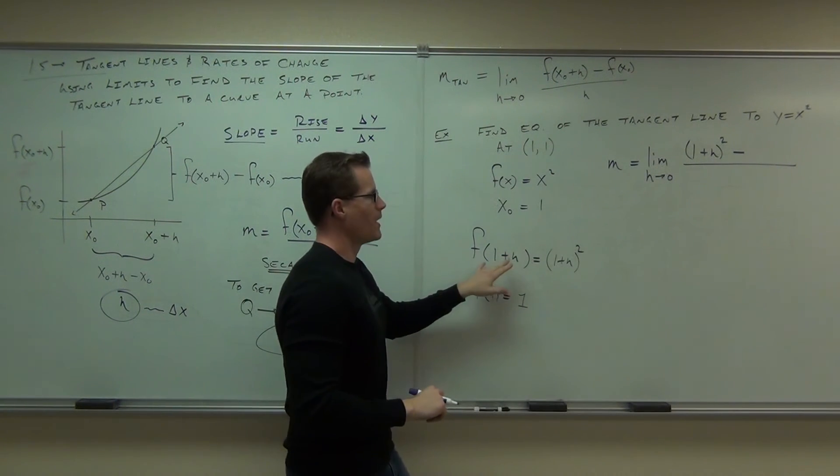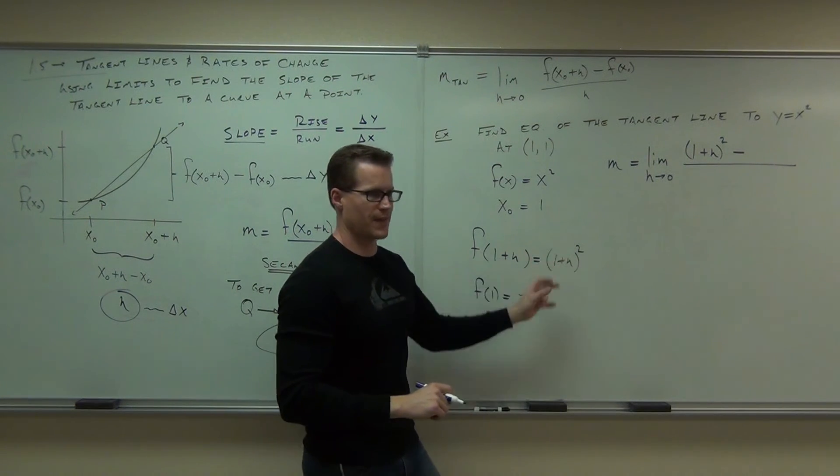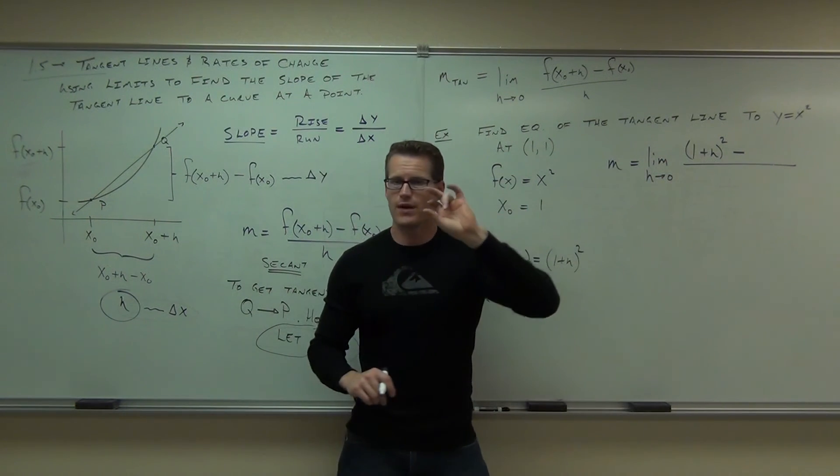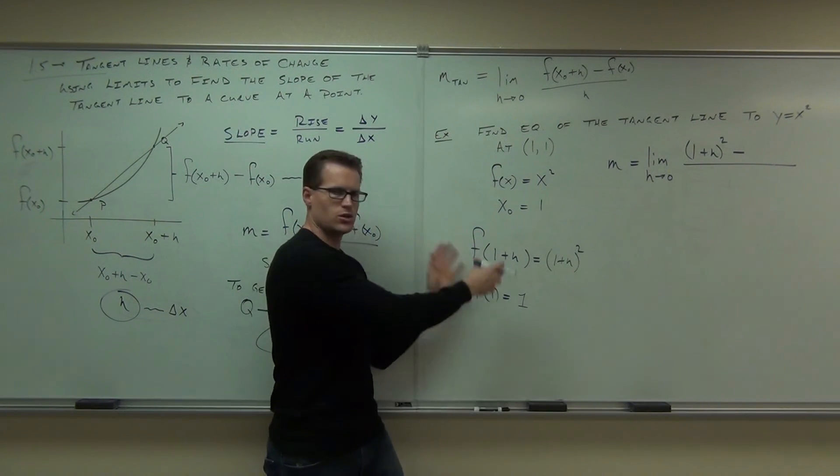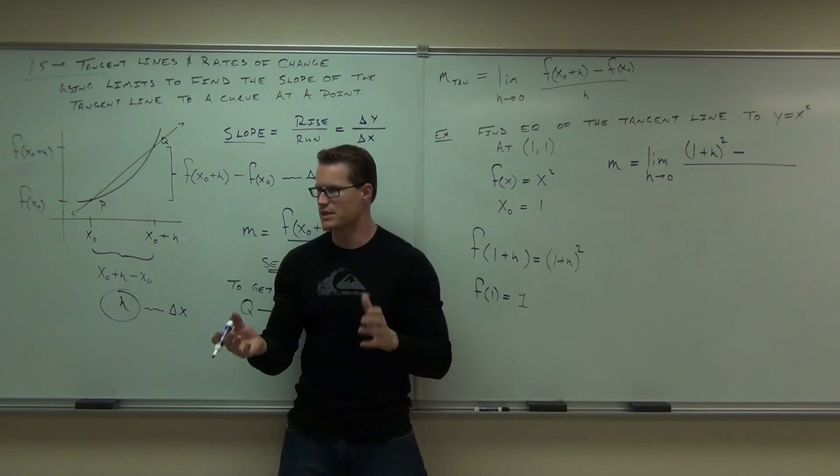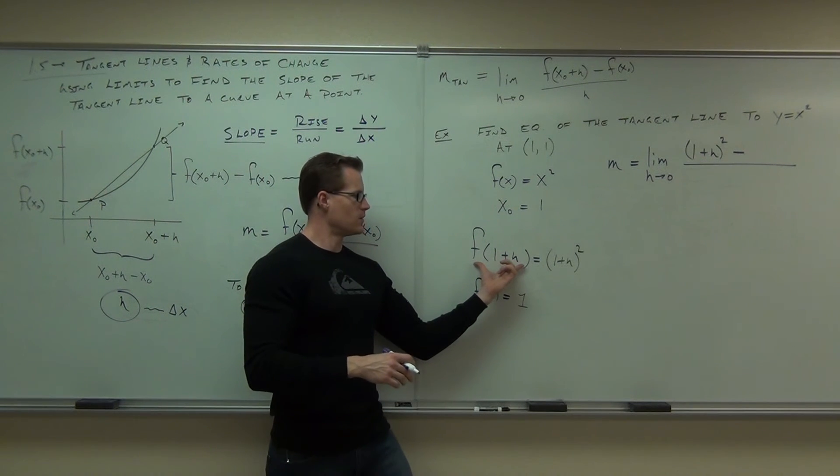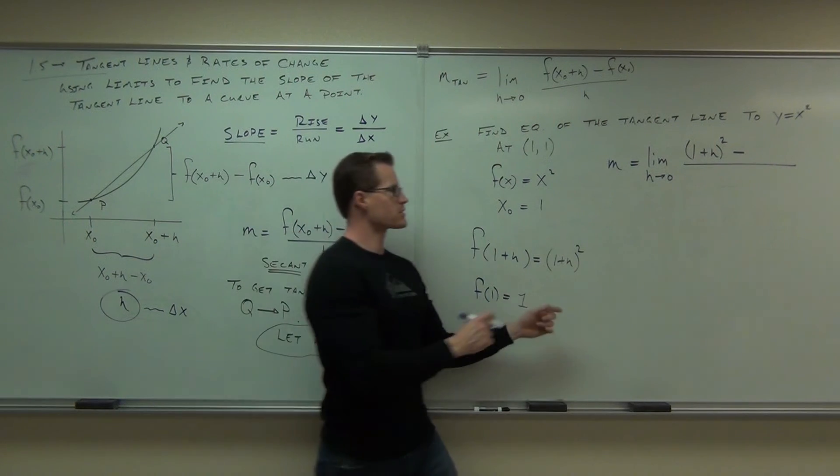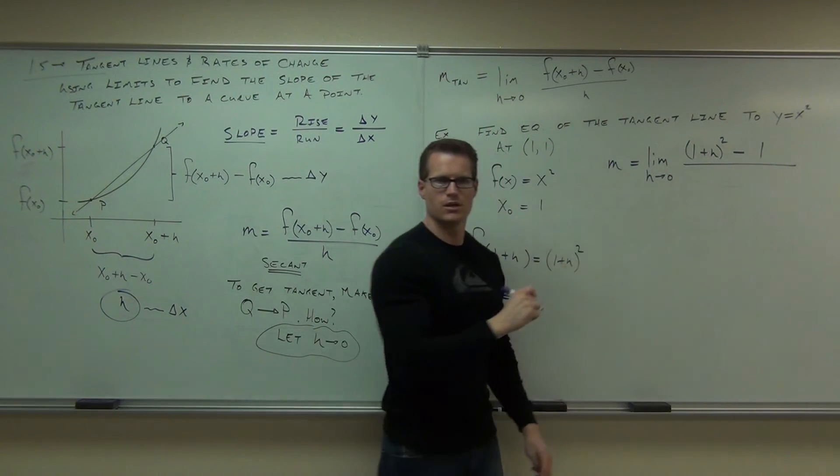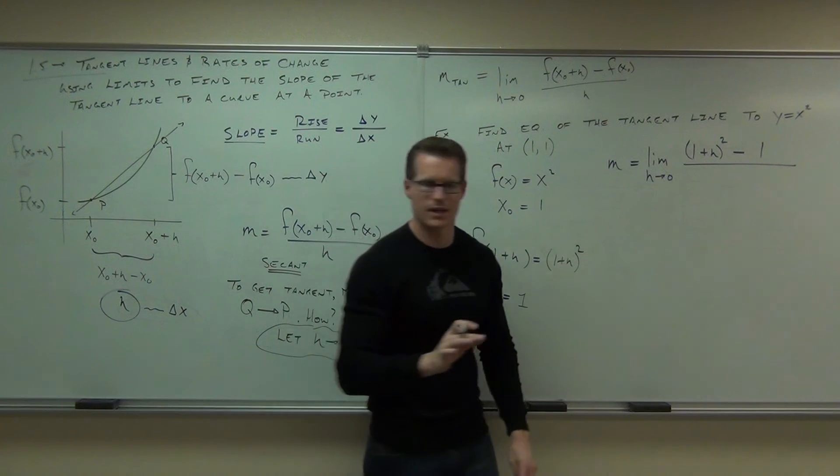So instead of f of x sub 0 plus h, I've already figured that out. That was 1 plus h squared. That's what I'm going to put first. Minus, instead of f of x sub 0, what did I work that out to? That's what I have you do off the side, right? You just break it down piece by piece. That's okay. f of 1 plus h was 1 plus h squared. f of 1 is 1. All over how much? Oh, don't forget that h. Don't forget that h.